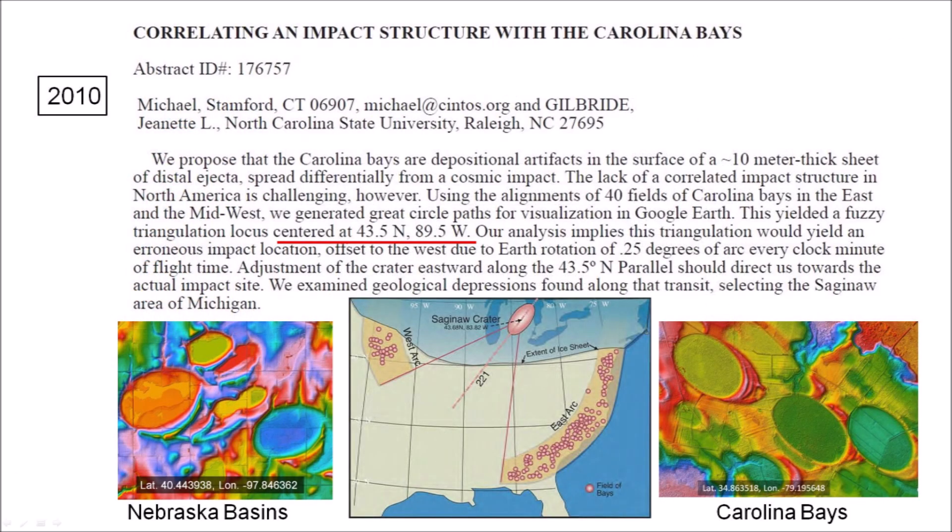In 2010, Davias and Gilbride found that the Carolina Bays and the Nebraska basins had a convergence point in Wisconsin similar to what had been described by Firestone. Davias and Gilbride examined geological depressions at the latitude of the convergence point and proposed Saginaw Bay in Michigan as the most likely point for the cosmic impact.